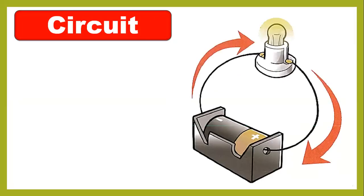In the previous class we learned about how to make a simple circuit. To make a simple circuit, we need a battery, a battery holder, a bulb, a bulb holder, and two wires to connect with the battery. So to make a circuit you need a bulb, a battery, and a wire.